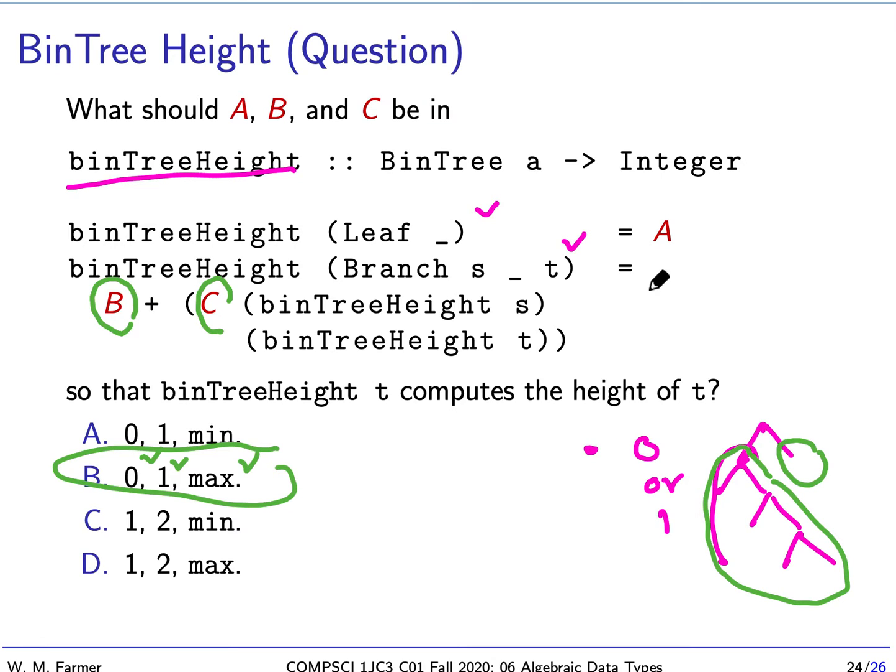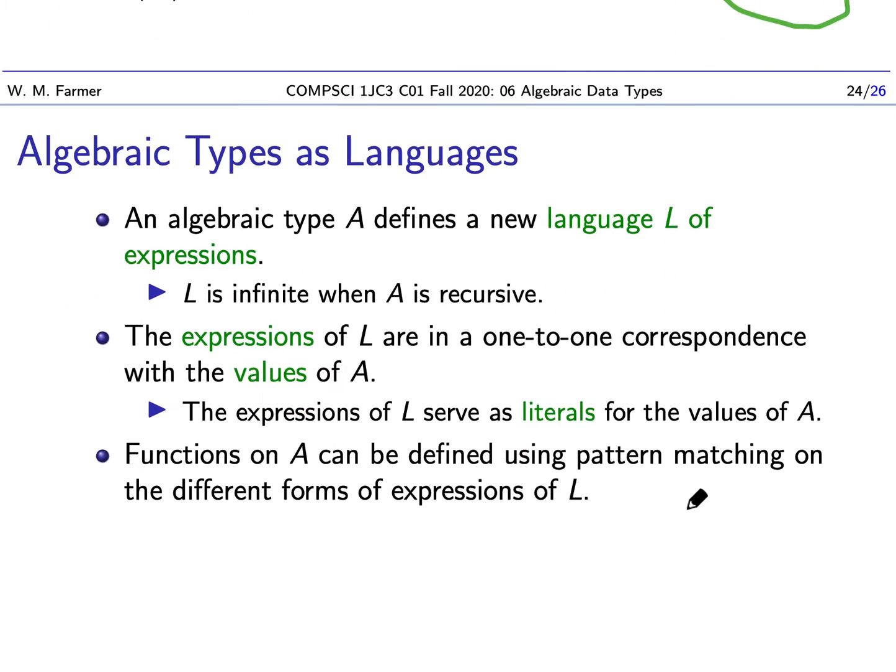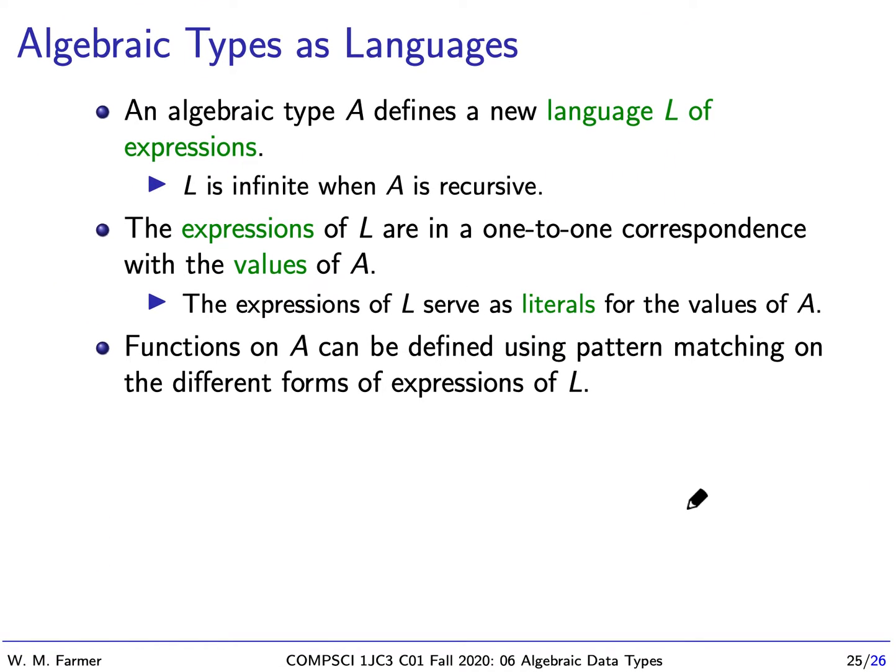So this is the answer. A leaf tree will have height zero. A branch tree will, its height will be one for this top node, the branch node, plus the maximum of the two subtrees.